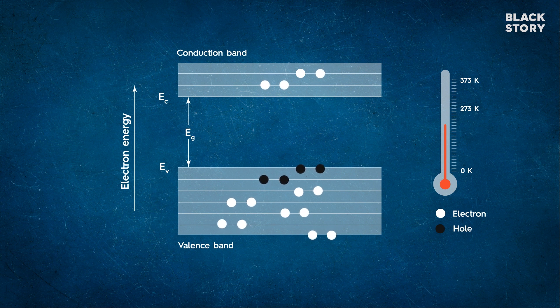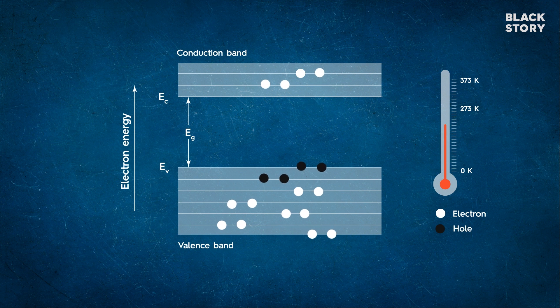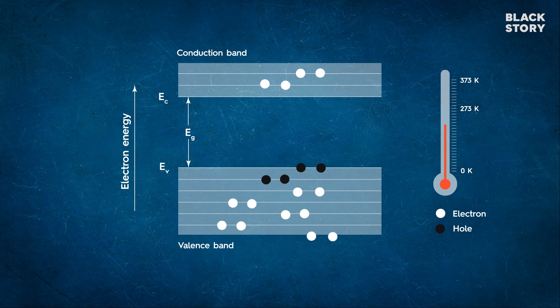A hole is the absence of an electron in a particular place in an atom. Although it is not a physical particle as an electron, it can be passed down from one atom to another in a semiconductor material.